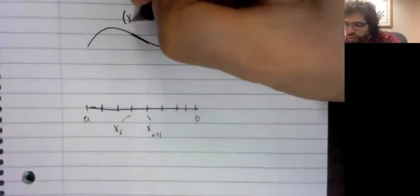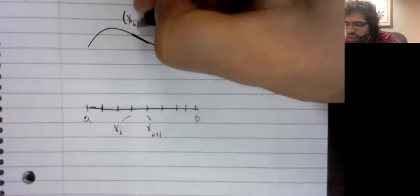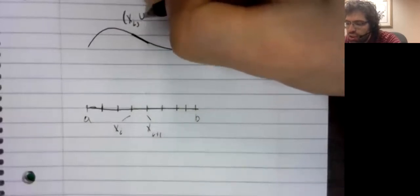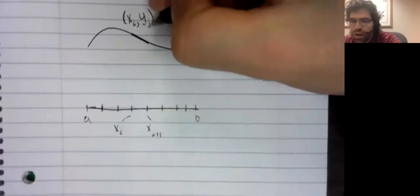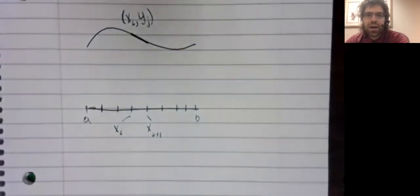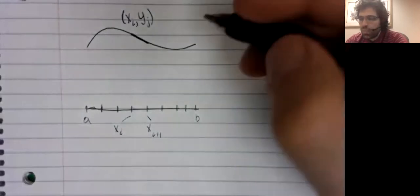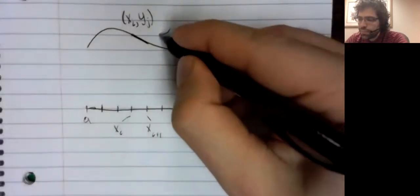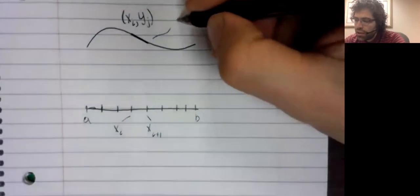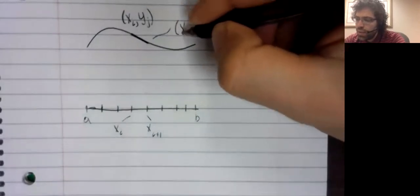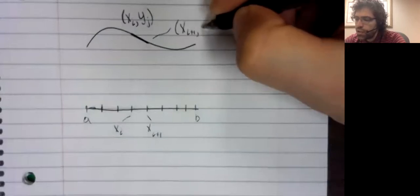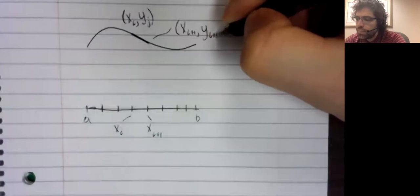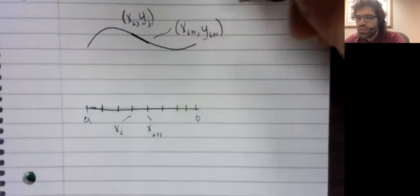Let's, for simplicity, call this x sub i, y sub i, instead of x sub i, f of x sub i. And this will be x sub i plus one, y sub i plus one.